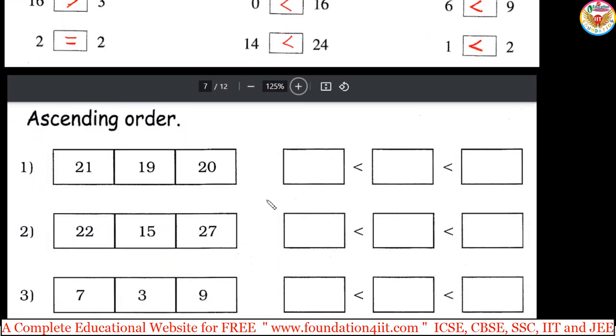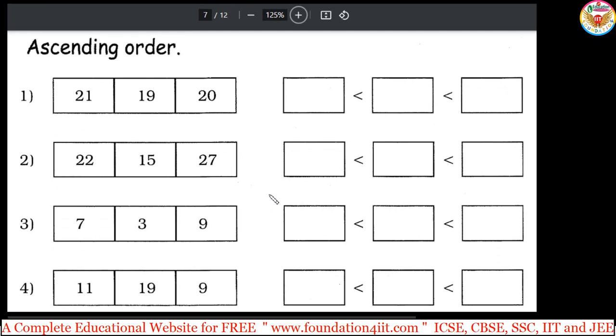Next, 7th page you can open in that PDF, you can see this ascending order. Ascending order is small to big, small to big numbers you have to write. In this series 21, 19, 20, the smallest you should write, largest should be last and middle is in the center. 21, 19, 20, 19 is the small, so 19 is right here, less than symbol. Next, small is 20, then 21. You can represent in this way.